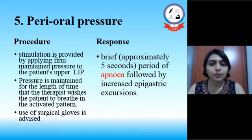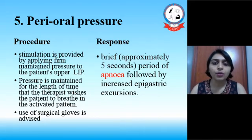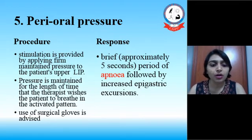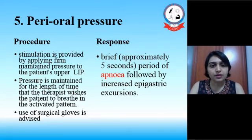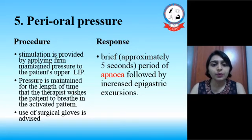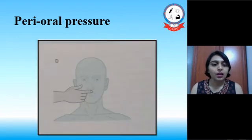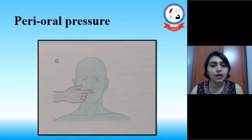The next technique is perioral pressure. We have to give stimulation by applying firm, maintained pressure to the patient's upper lip. The pressure is maintained for the length of time that the therapist wishes the patient to breathe in an active pattern. Use of surgical gloves is advised to avoid infection from therapist to patient, and we need to change the gloves between patients. The response will be brief — approximately five seconds — with a brief period of apnea followed by an increase in epigastric excursion. Here in the figure, we can see pressure being applied to the upper lip of the patient.